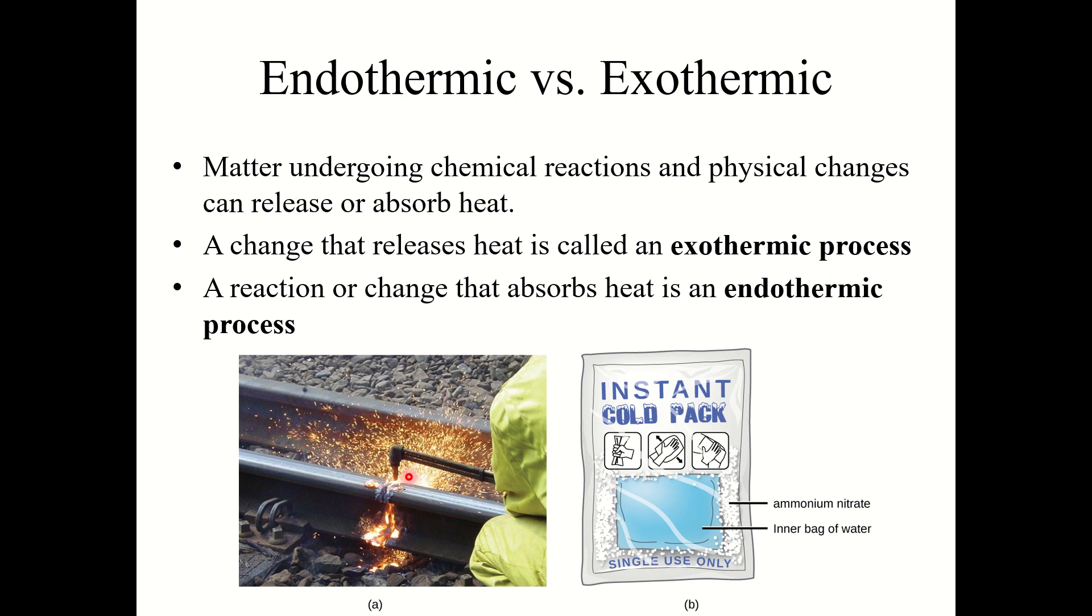So two really good examples of this. First would be welding. So let's say it looks like some railroad rails are being welded together here. So the reaction in the welding torch here, usually this uses acetylene. This is basically a high temperature, high pressure combustion reaction. So this reaction releases heat, and that heat is used to weld the metals together.